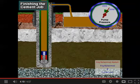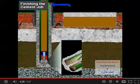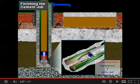A sharp rise in pump pressure signals the pump operator to shut down the pump. The float valve holds the cement in place, not allowing it to flow back into the casing once it is displaced into the annulus. The cementing job is complete.